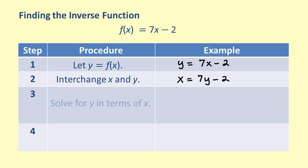Then, solve for y in terms of x. So we get negative 7y equals negative x minus 2. Check your work carefully, as a mistake here can give us the wrong inverse function. Continuing to solve for y, we get y equals 1/7 x plus 2/7.